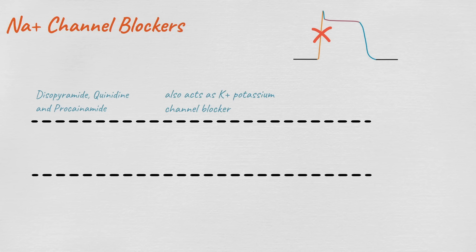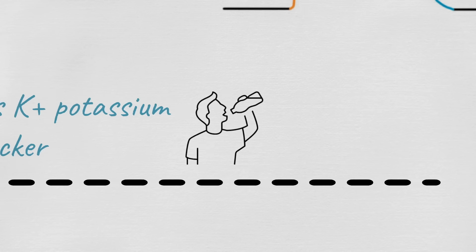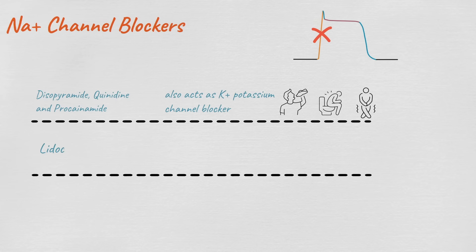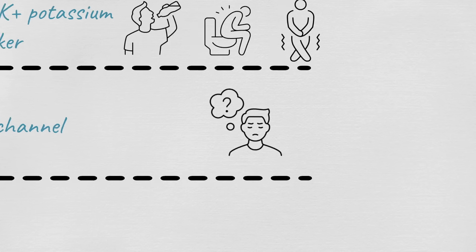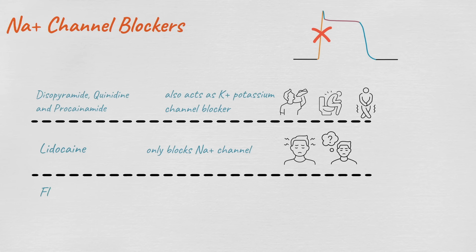They all have anticholinergic activity, so they have anticholinergic side effects like dry mouth, constipation, and urinary retention. Then we have lidocaine, which blocks the sodium channels and can shorten the action potential. Also it can cross the blood-brain barrier, so it will cause drowsiness, confusion, and convulsions.